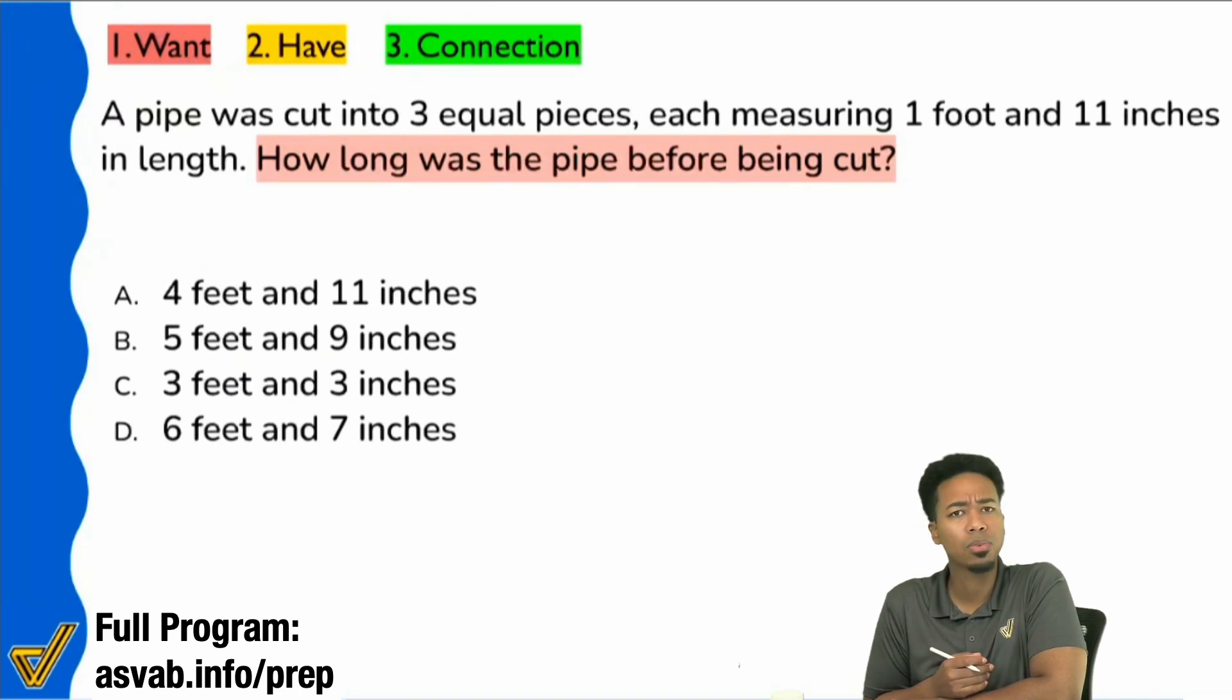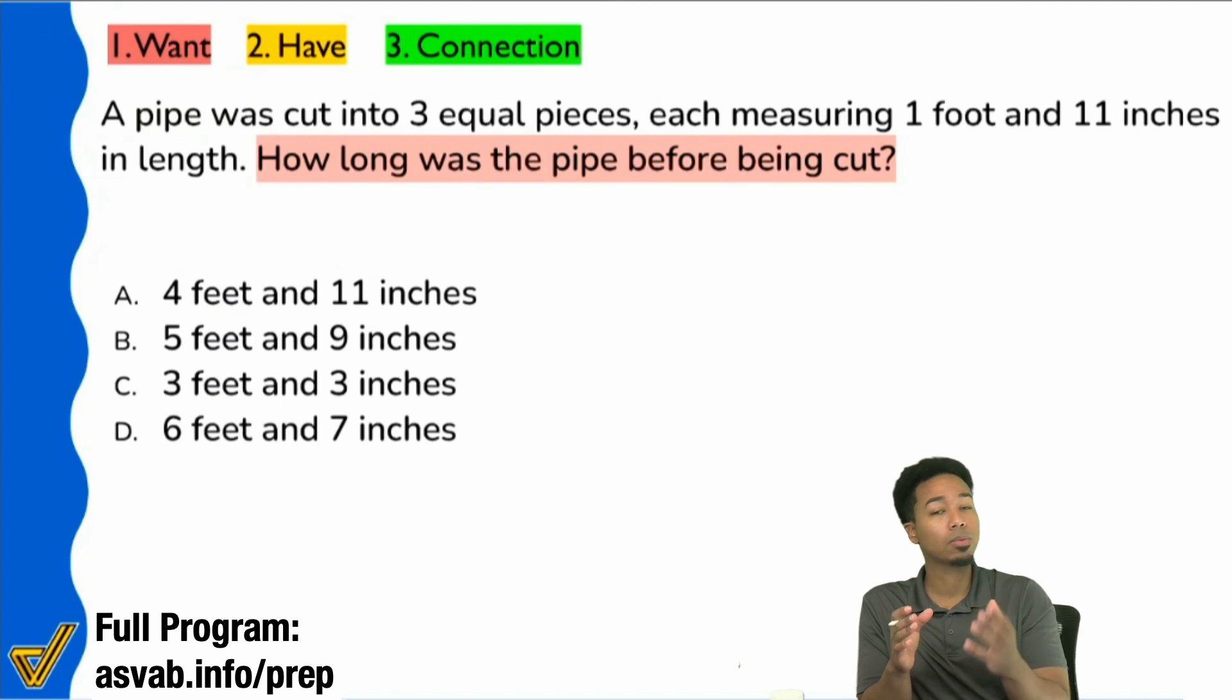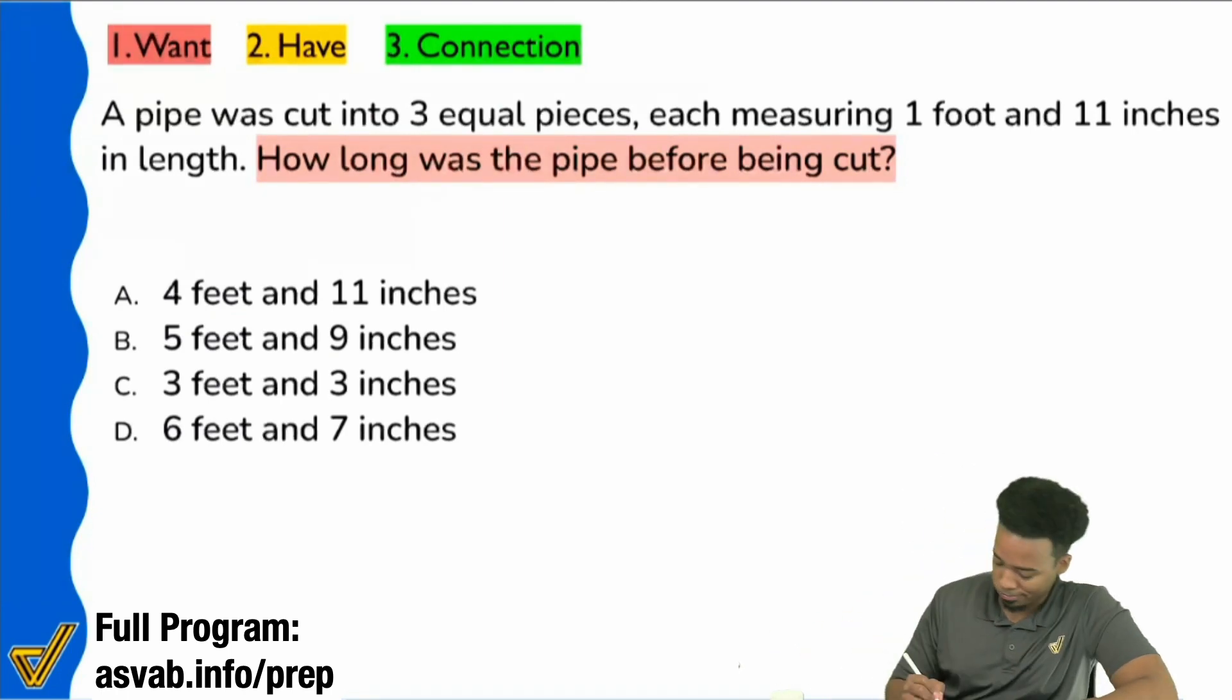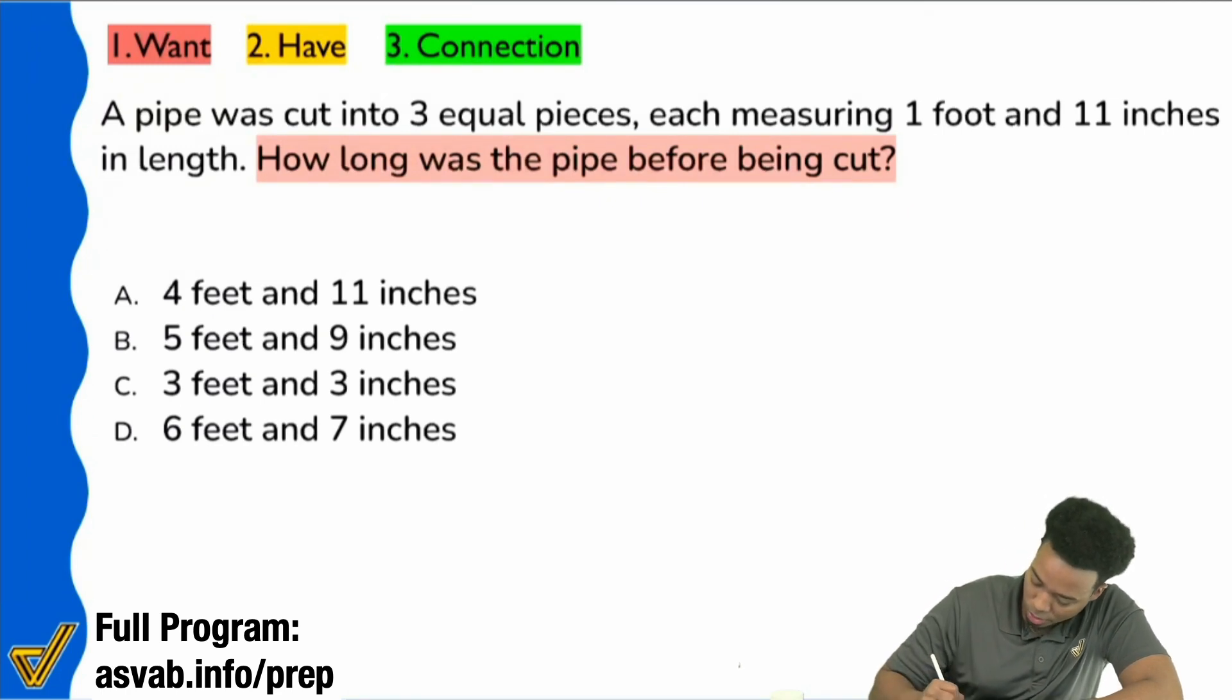What's the question saying? How long was the pipe before being cut, so what are you looking for? That's a good way to put it, Landa - the size of the pipe at the beginning before being cut. There's two things you really want to emphasize here. Number one, it says 'how long was the pipe,' so I'm going to highlight this - pipe length equals blank.